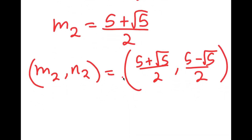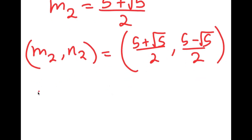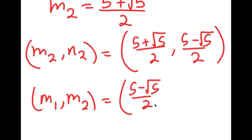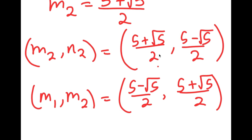So this is my second solution to this system of equations. Notice how these two solutions are just the opposites of each other — the m and n values switch order. My first solution is (m₁, n₁) = (5 minus √5)/2, (5 plus √5)/2, and my second solution is (m₂, n₂) = (5 plus √5)/2, (5 minus √5)/2. These are my two solutions.